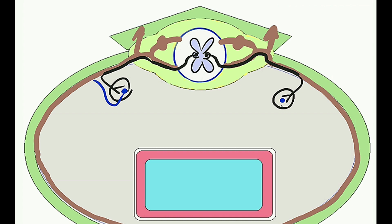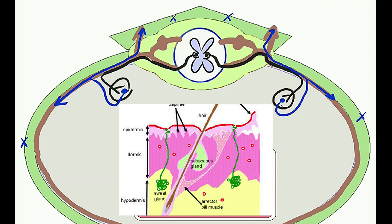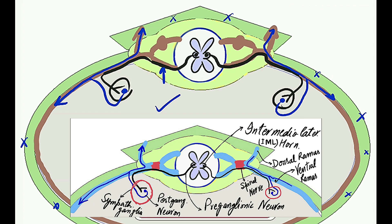The post-ganglionic neuron re-enters the spinal nerve, merges in the ventral ramus as well as the dorsal ramus. Through the spinal nerves, this post-ganglionic neuron targets the viscera present in the body wall — such as sweat glands, sebaceous glands, and arrector pili. The pre-ganglionic neuron — the first fiber — is known as the white rami communicantes, and the post-ganglionic neuron — the second fiber — is known as the gray rami communicantes.